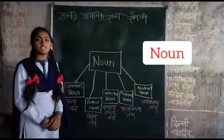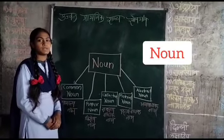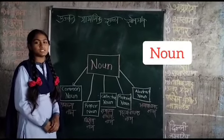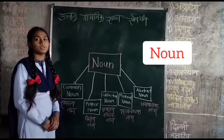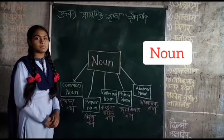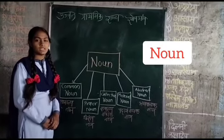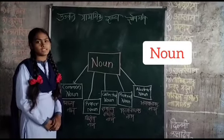Nouns are words that are the name of things, places, animals, people, qualities, rules, birds, ideas. For example, fence, bench, coverage, girls, boys, etc.